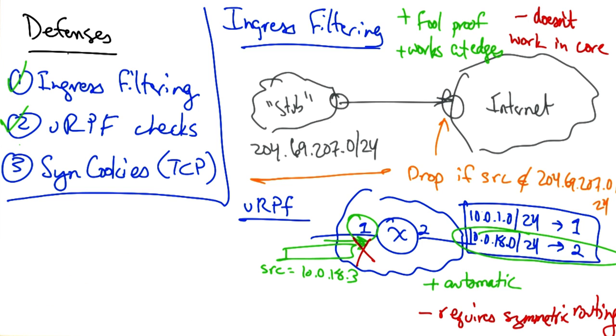So we've talked about ingress filtering and URPF checks. And let's now talk about the use of syn cookies to defend against TCP-based denial of service attacks.